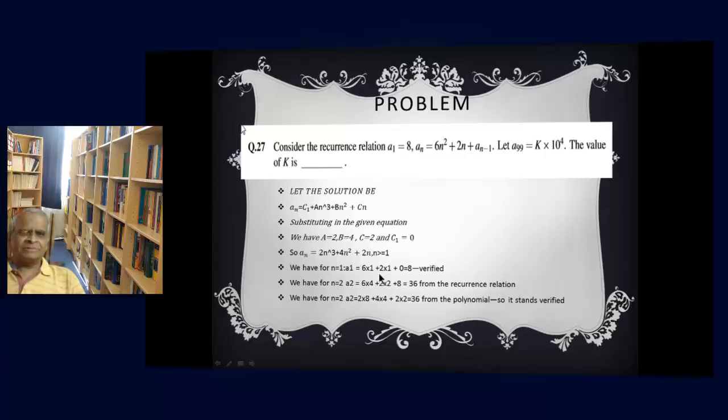For n equals 1, the recurrence relation evaluates to 6 into 1 plus 2 into 1 plus 0, that turns out to be 8. The polynomial evaluates to 2 into 1, 4 into 1, 2 into 1, also 8. n equals 1 is verified.